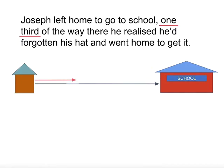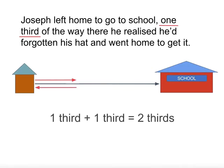He then went back home, so travelled another third to get home. That means a number sentence would be one third plus another third, which is two thirds altogether. In symbols, we can write it like this.